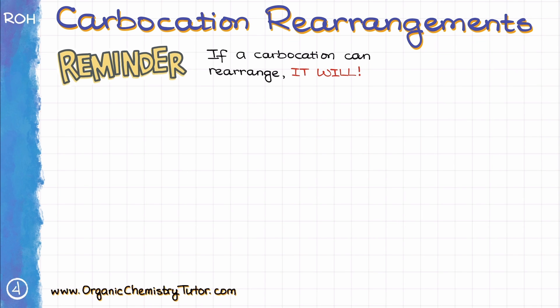Remember that if a carbocation rearrangement can give you a more stable carbocation, it will happen before the nucleophilic attack. Which means that every time we make a carbocation as our intermediate, we always have to check for possible rearrangements. This should be your immediate red flag: I see a carbocation, I check for a possible rearrangement.